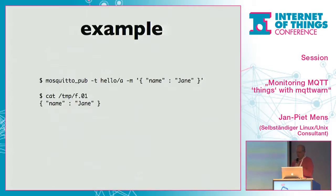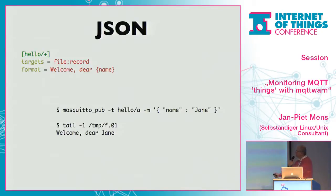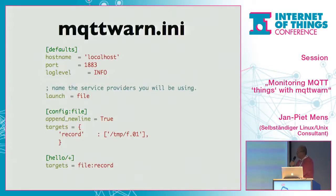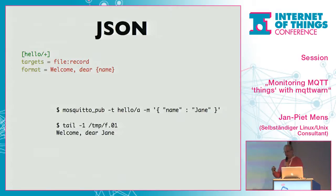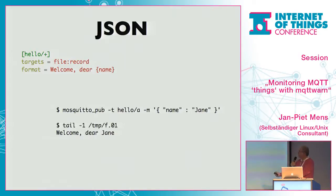Let's look at an example. We publish to the topic 'hello/a' a JSON payload. And if we look at that file, we get exactly that payload in there — nothing particularly special. Now let's do one slight modification: targets equals target name, and we add 'format equals welcome, dear {name}'. MQTT Warn will attempt to decode JSON automatically from incoming payloads. If it is not JSON, nothing happens. If it is JSON, it's decoded, and the resulting elements can be used to create output — that's the format statement. If we now republish the same thing and look at the last line in the file, it says 'welcome, dear Jane.' The name element out of the JSON has been inserted at that point.